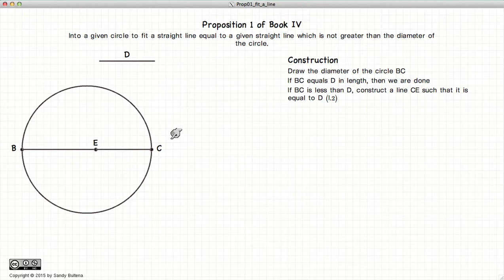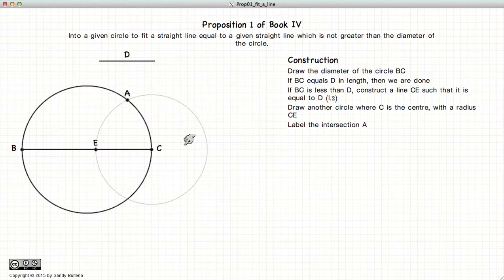Now we create a circle with C as the center and EC as the radius, and we label the intersection of the two circles as A, and we draw a line from A to C. Now line AC is equal to D.